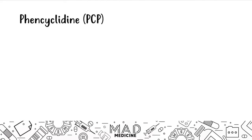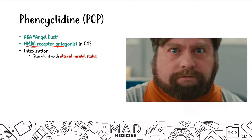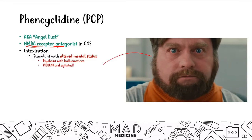The last hallucinogen to know for Step 1 is phencyclidine — PCP, also known as angel dust. The main thing to know about PCP is that it is an NMDA receptor antagonist — it blocks NMDA receptors. This results in an altered mental status with stimulant capability. Patients will become psychotic with hallucinations, and they'll become violent and agitated.